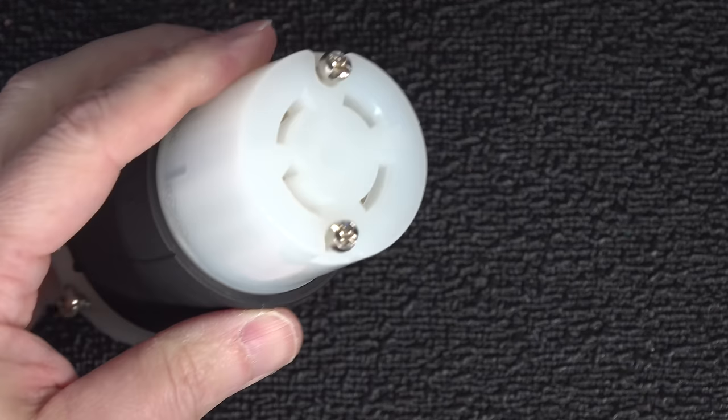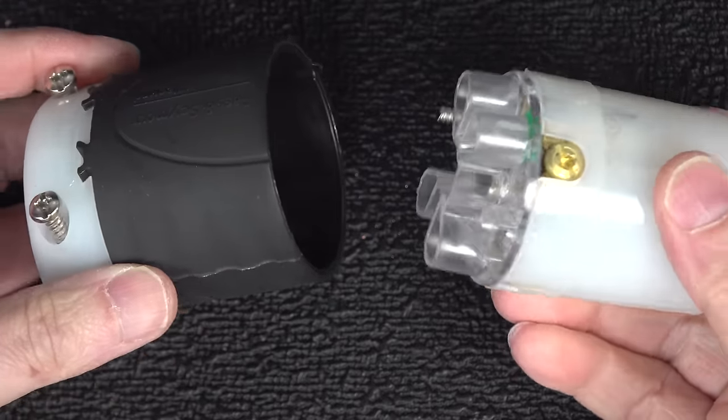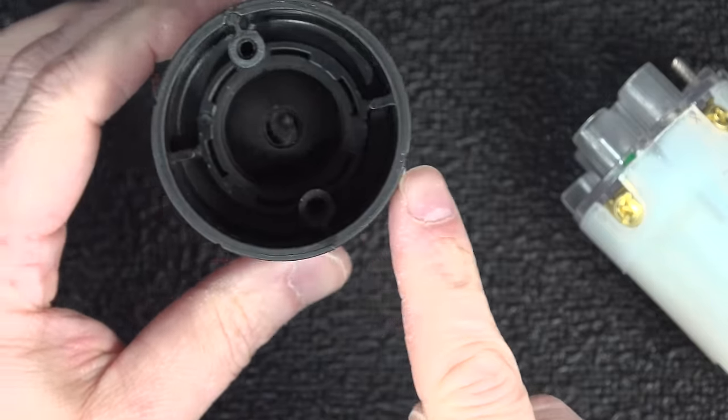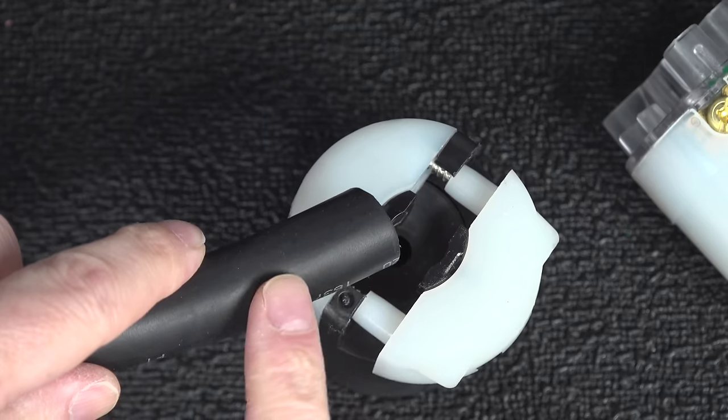I'm going to start with the female plug first and we need to separate this thing apart so you just need to remove these two screws and now you've got the protective shell along with the connector.